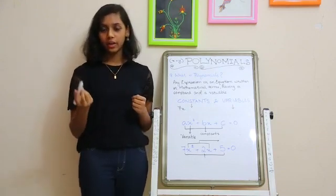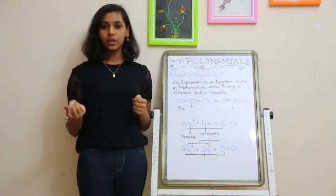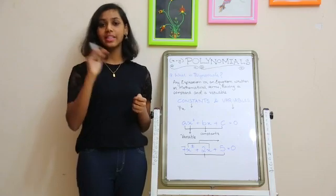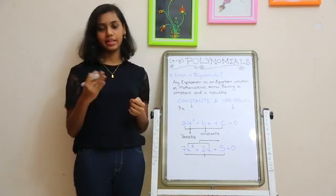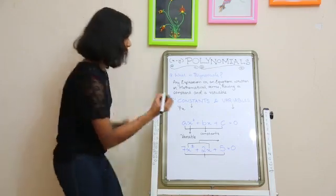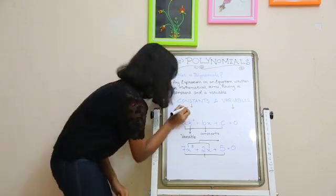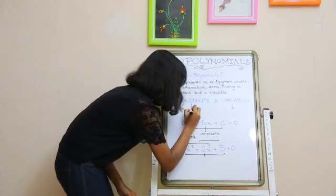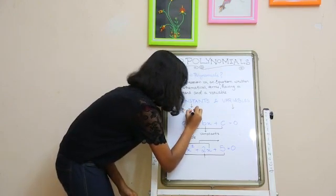We can replace x with 1, 2, or other numbers, but we can't replace 7 with any other number. So constants are fixed values.